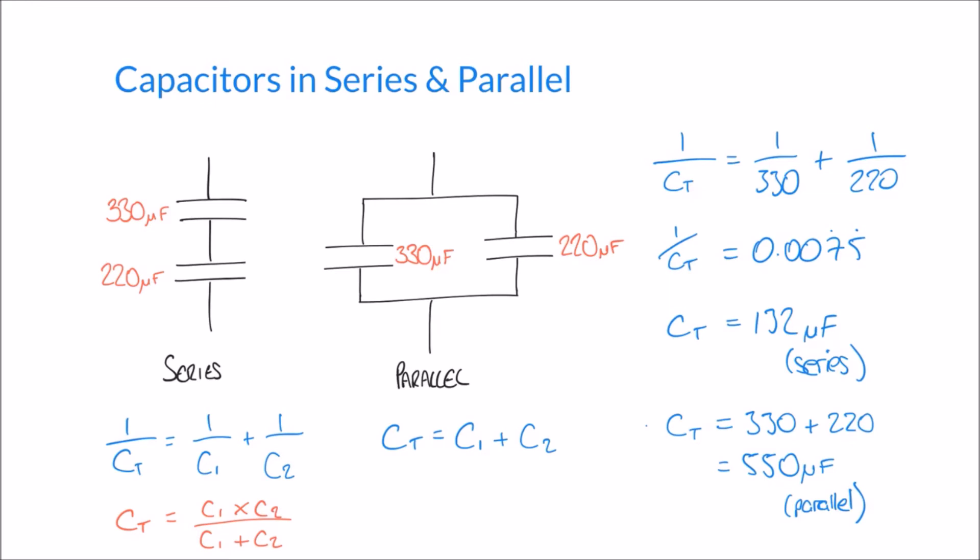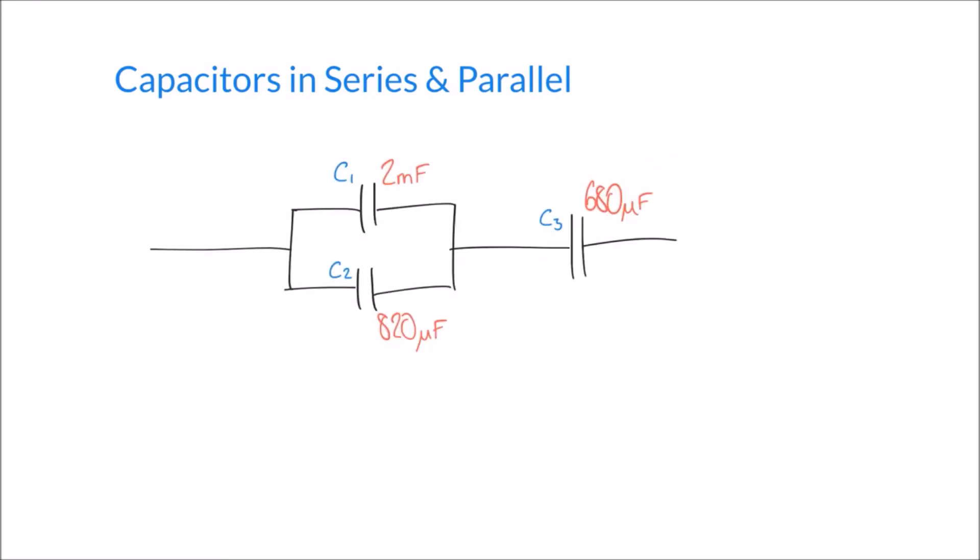Let's have a look at one more example. Here I have a slightly more complicated arrangement of capacitors, because I have two capacitors that are in parallel connected to a third capacitor in series. So to work out the total capacitance of this combination, I'm first going to try and simplify the circuit by looking at these parallel capacitors first.